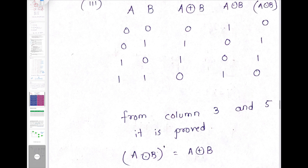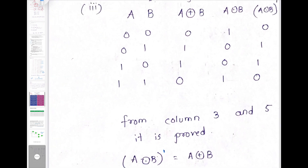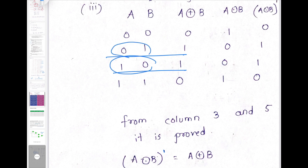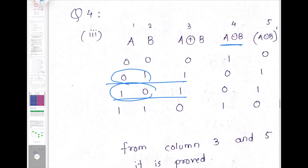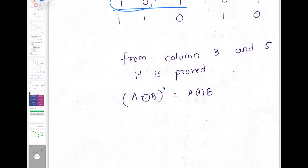Next, question number 4 part 3: we have to prove that (A XNOR B)' = A XOR B using a truth table. A XOR B gives 0, 1, 1, 0 since an odd number of ones results in 1. XNOR gives 1 when there is an even number of ones. When I find the complement of XNOR, I get a column that matches XOR exactly. From column 3 and column 5 all entries are the same, so it is proved that (A XNOR B)' = A XOR B.